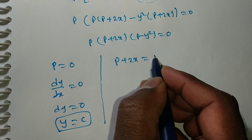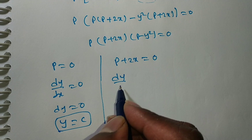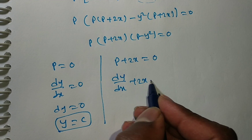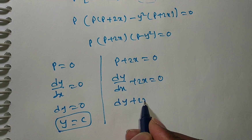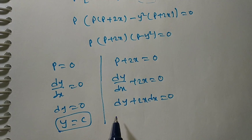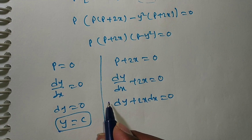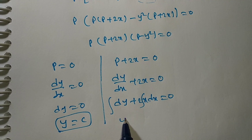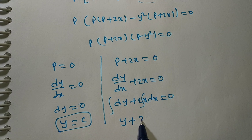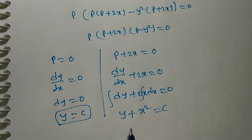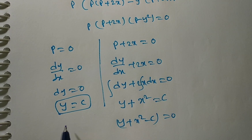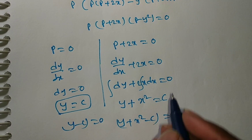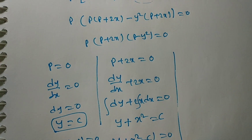Second factor: p plus 2x equals zero, so dy/dx plus 2x equals zero. Rearranging: dy plus 2x dx equals zero. Integrating: y plus x squared equals c, or y plus x squared minus c equals zero. This is the second solution.